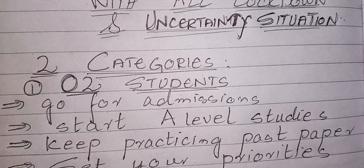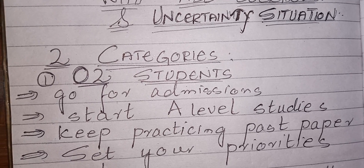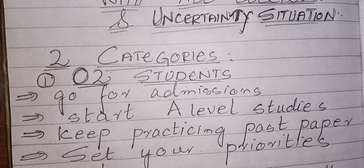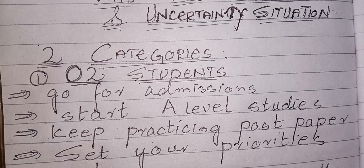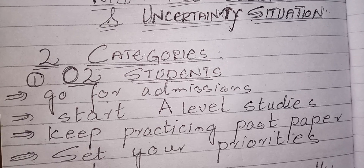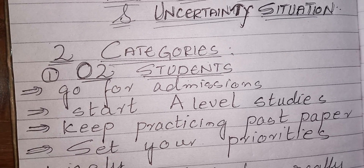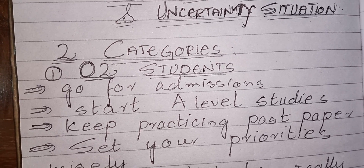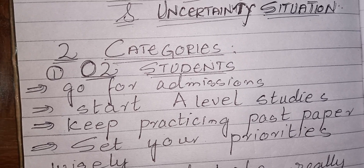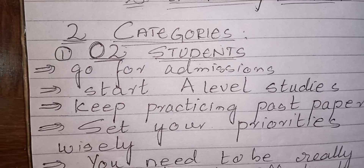O-level students will be taking exams in October/November, and they will also have an AS exam within six months of that. So it is very important for them to plan effectively from now until their October/November exams. They must start their A-level studies, focus on admissions, and begin preparing for A-level exams. Don't waste time — keep practicing past papers for O-level subjects as well.